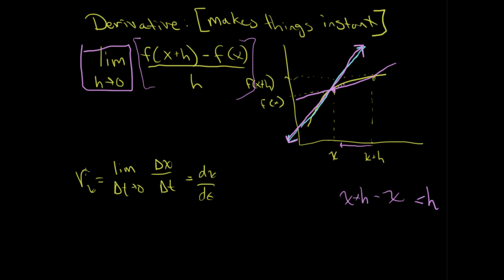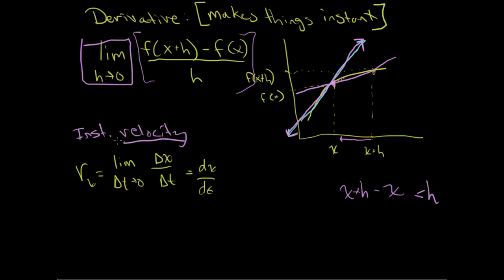It's not really any different than the instantaneous velocity. Which, from now on, I will just be calling instantaneous velocity just velocity. If I am specifying for average speed, I will say average speed. If I just say velocity, I mean instantaneous velocity from now on.